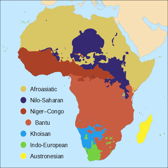The inclusion of the Songhai languages is questionable, and doubts have been raised over the Komen, Gumuz and Kadu branches. Some of the better known Nilo-Saharan languages are Kanuri, Fur, Songhai, Nubian and the widespread Nilotic family, which includes the Luo, Dinka and Maasai. The Nilo-Saharan languages are tonal.